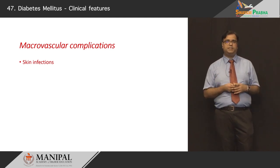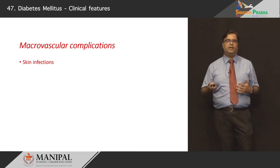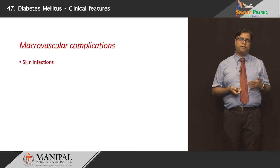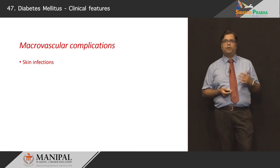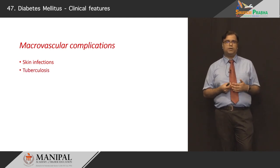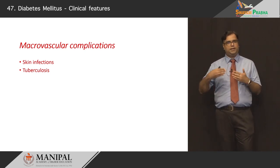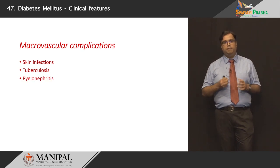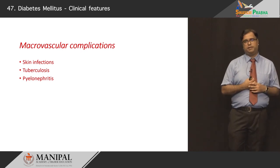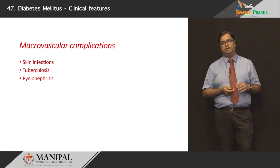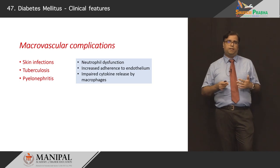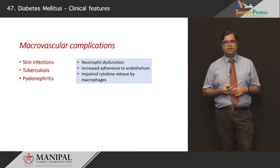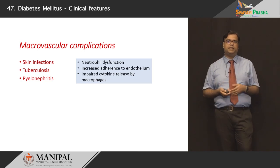Apart from the trifecta of retinopathy, nephropathy, and neuropathy, patients may have trivial problems such as skin infections. Wounds do not heal in diabetics, and bacterial infections take over. They can present with granuloma annulare or necrobiosis lipoidica diabeticorum. They can come with tuberculosis — diabetes has lower immunity, making patients vulnerable to opportunistic infections, including TB in India. Ascending urinary tract infection resulting in pyelonephritis — acute inflammation of the renal pelvic-calyceal system — is also possible. This is mainly due to dysfunction of neutrophils, increased vascular endothelial adhesion, and impaired cytokine release by macrophages.